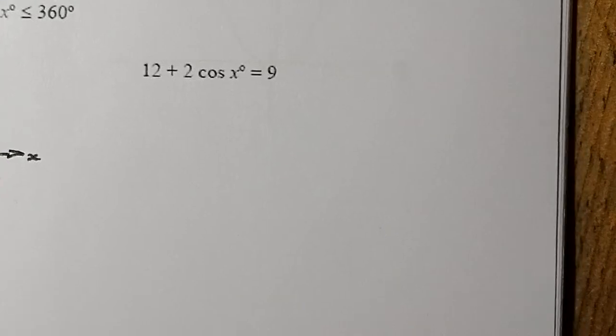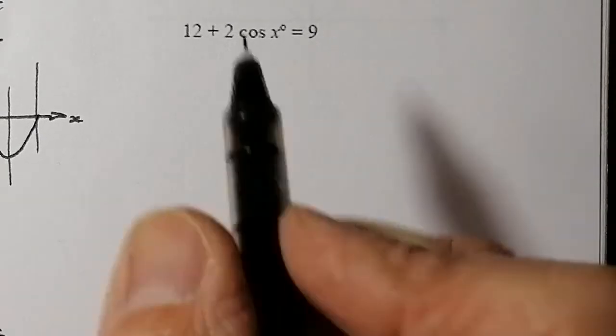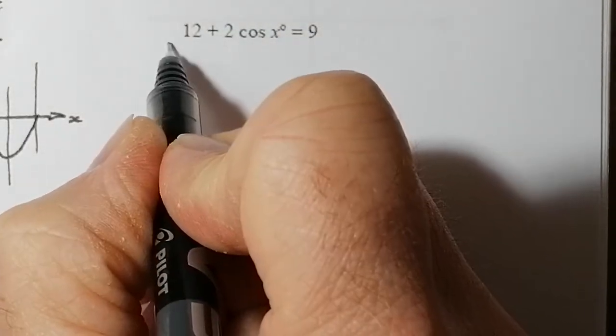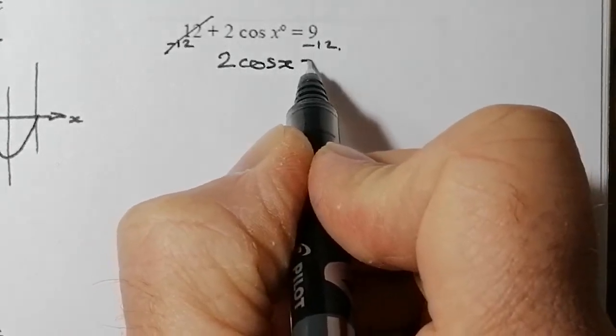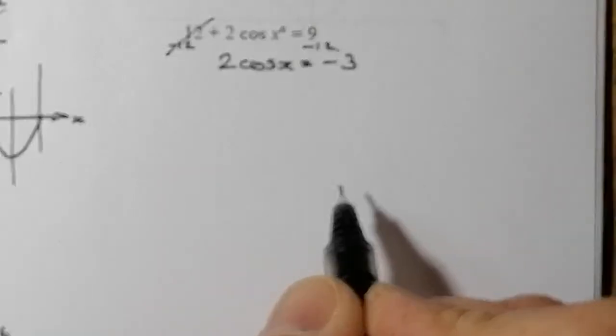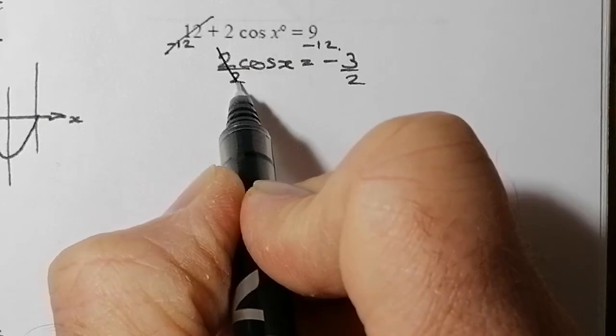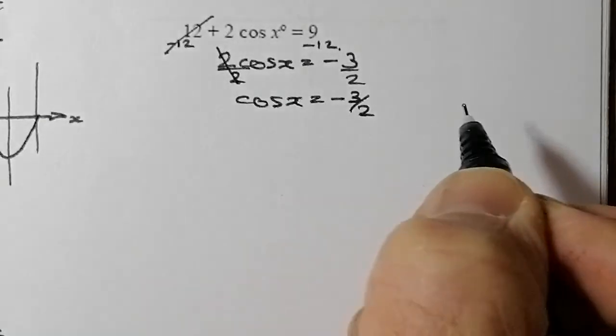Let's look at the second question. Something kind of similar with a little twist. I've got to solve 12 + 2 cos x² = 9. First thing I'm going to do is rearrange it to get cos x on the left-hand side. I'll take away 12 from both sides, which leaves 2 cos x = -3. Then I'll divide each side by 2, so that leaves me with cos x = -3/2.